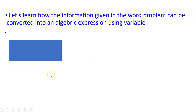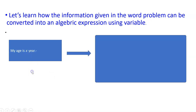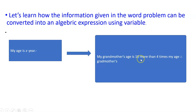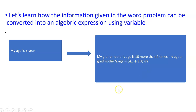See the first example. My age is x years and my grandmother's age is 10 more than 4 times my age. Therefore, grandmother's age is 4x plus 10 years.